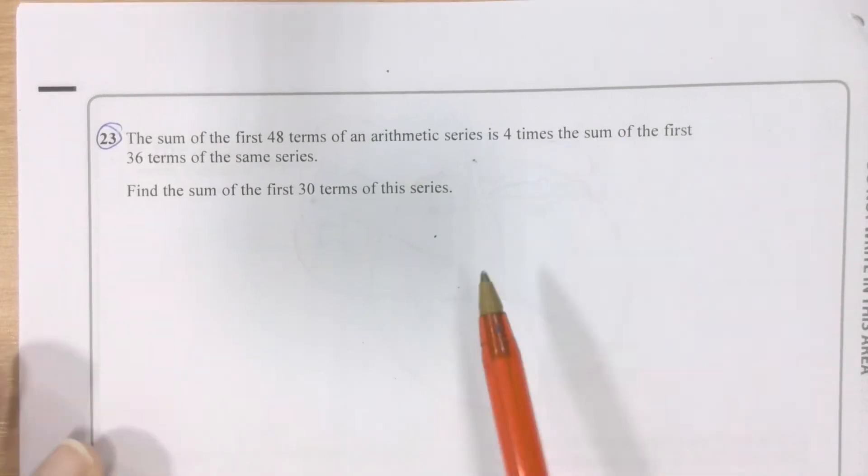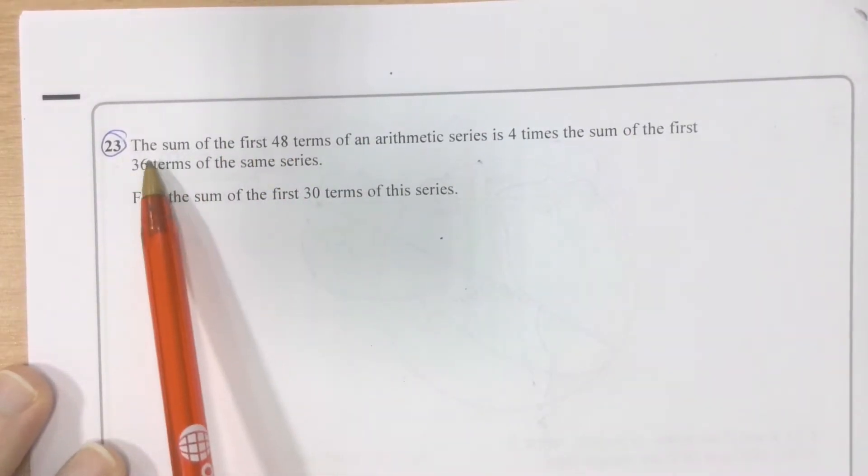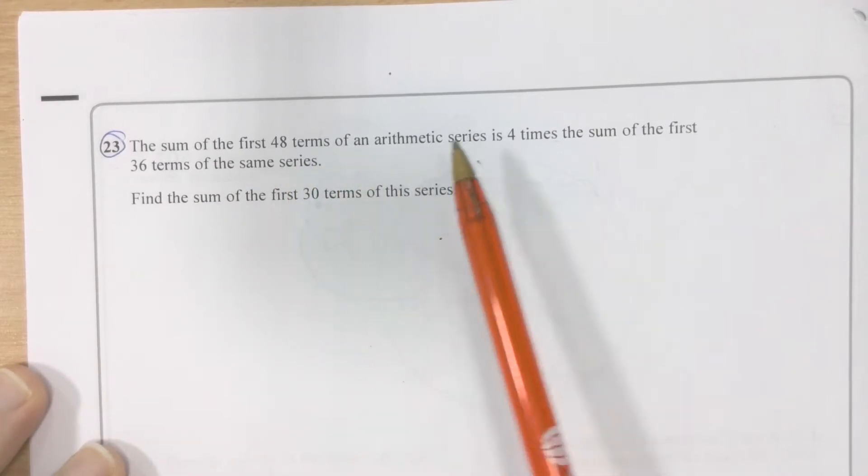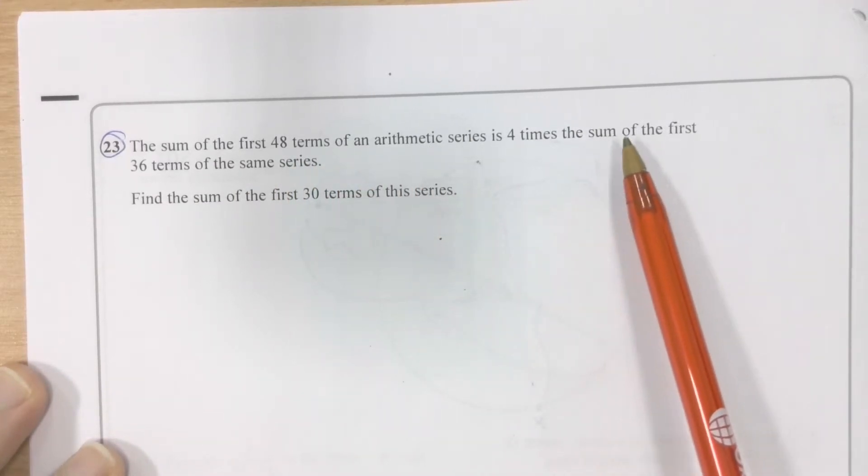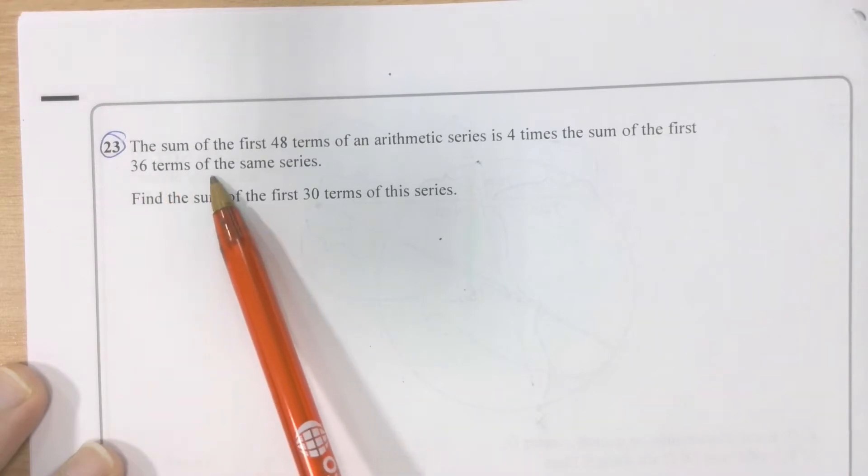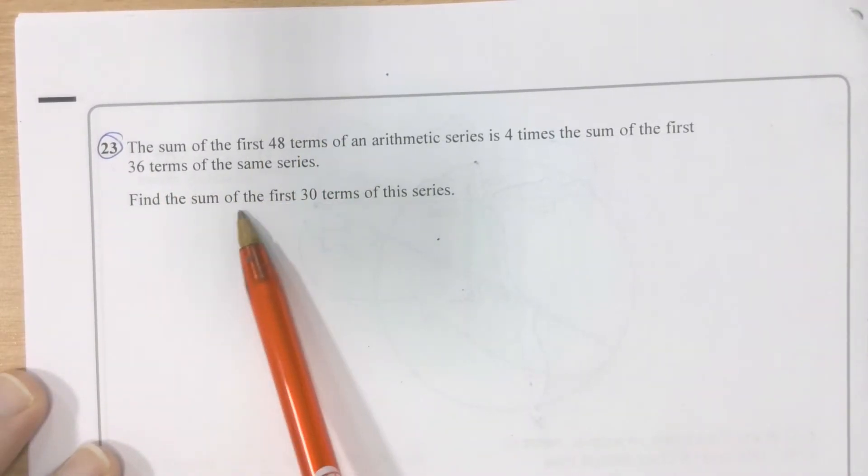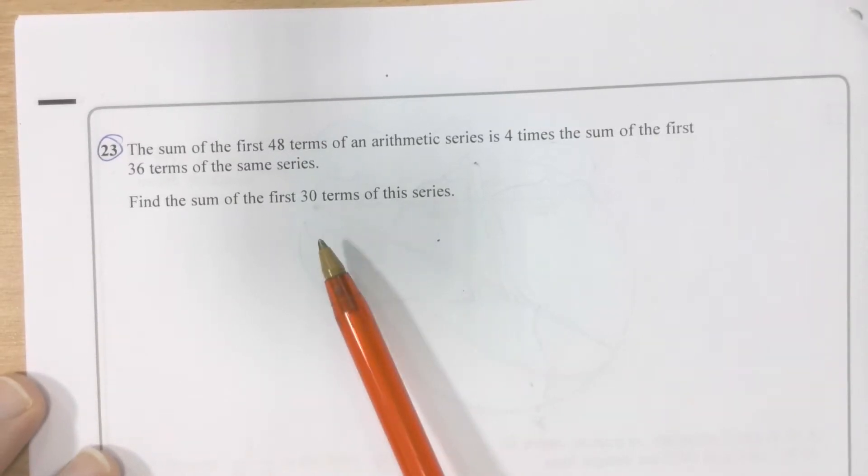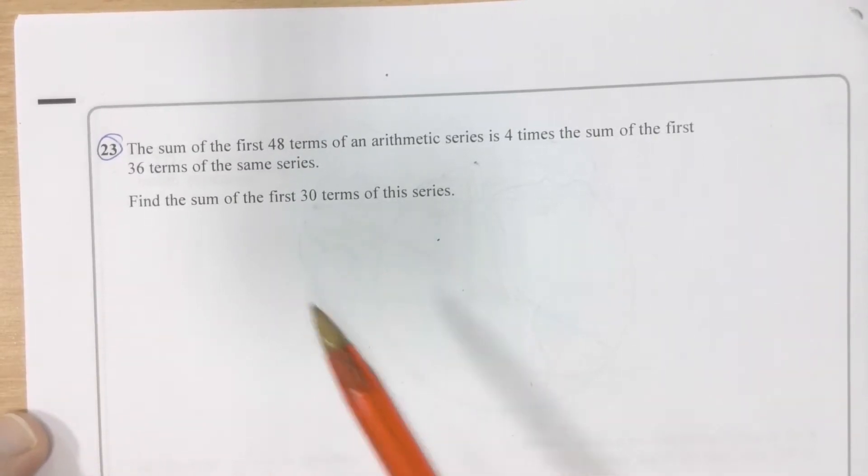About arithmetic series. Let's get to it. The sum of the first 48 terms of an arithmetic series is 4 times the sum of the first 36 terms of the same series. Find the sum of the first 30 terms of this series. Wow, what a monster this is.